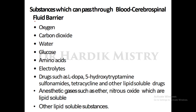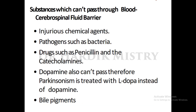Substances which can pass through the blood-CSF barrier include: oxygen, carbon dioxide, water, glucose, amino acids, electrolytes, drugs such as L-DOPA, 5-hydroxytryptamine, sulfonamides, tetracycline, nitrous oxide, and other lipid-soluble drugs and substances. Substances which cannot pass through the blood-CSF barrier include injurious chemical agents and pathogens such as bacteria.